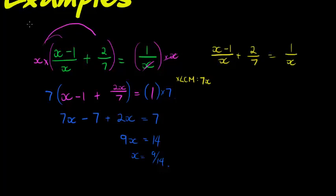So after we've done that we can just multiply every term now with 7X. What happens? In the first one the X cancels, in the second one the 7 cancels, in the third one the X cancels again. Once I simplify, it's 7 times X minus 1, which is 7X minus 7, plus 2X, plus 7 equals 7.